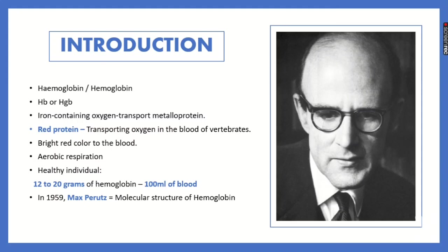Hemoglobin is called a metalloprotein because of the iron metal atom at the center of its structure. It is also called a red protein because it gives the bright red color to the blood. Hemoglobin transports oxygen in the blood of vertebrates — the oxygen bound to hemoglobin is transported to the tissues, where it generates energy through metabolism.